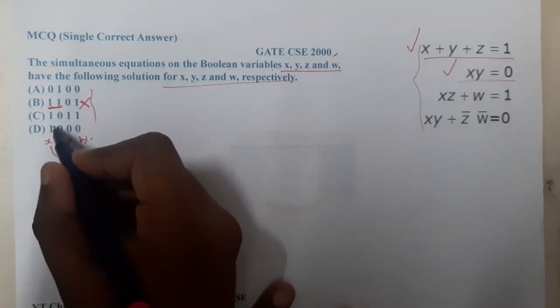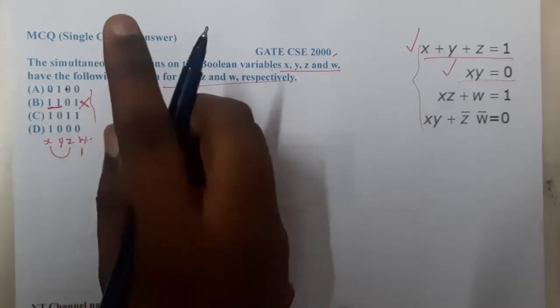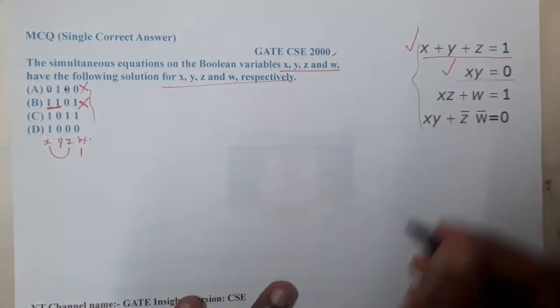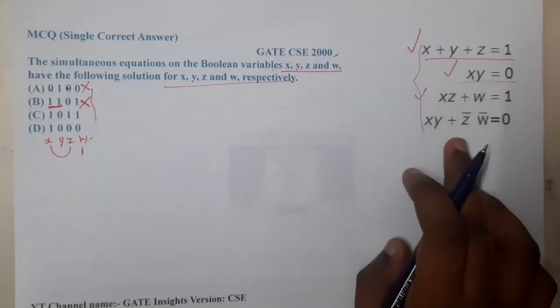If you multiply this, it's zero times zero plus zero, which is zero, so it's not equal to one. Hence option A is gone with this equation. Moving on to the last step, C and D are left.